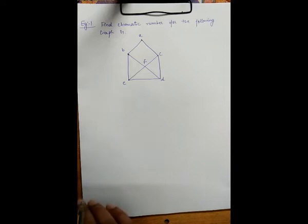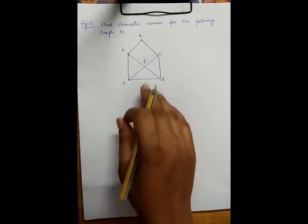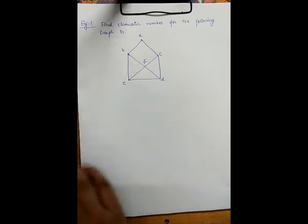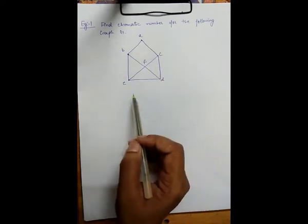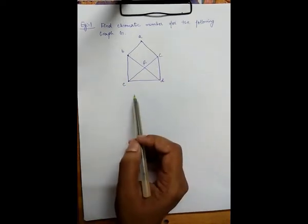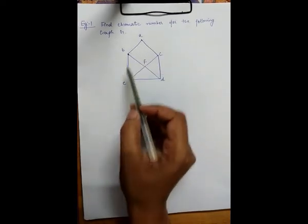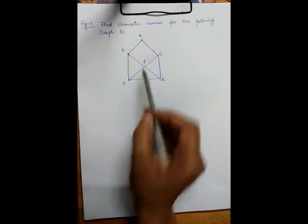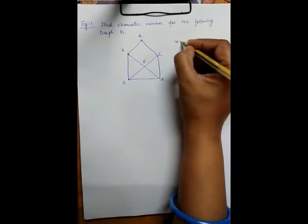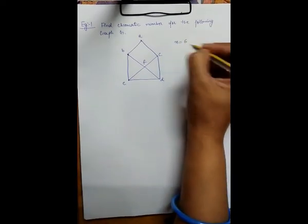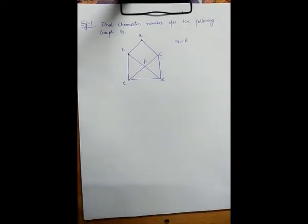Now with the same property, we are finding the chromatic number for this particular graph. As we know, in this graph we have 1, 2, 3, 4, 5, 6 total number of vertices, so N is 6.